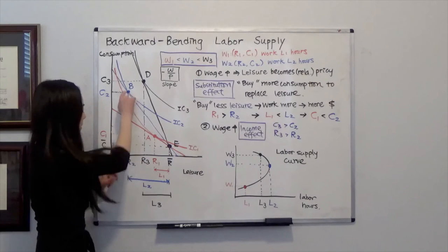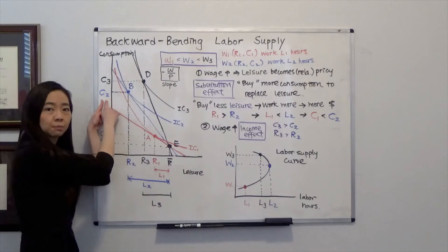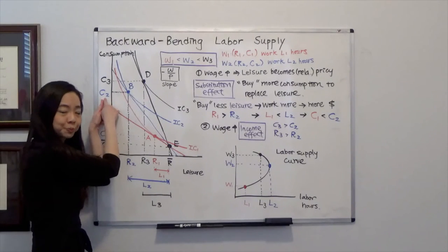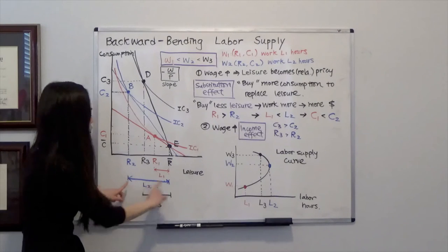Notice at point B, your leisure is only R2 hours, and you're going to consume more consumption at point C2. And therefore, when you leisure fewer hours, that means you work more hours.